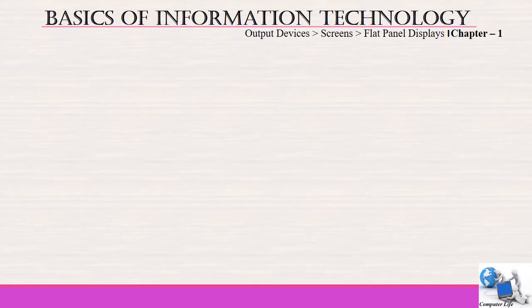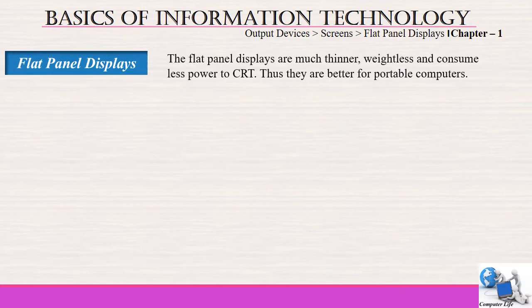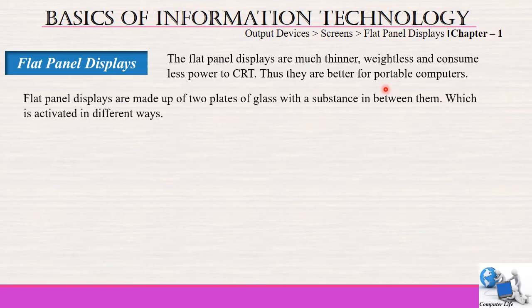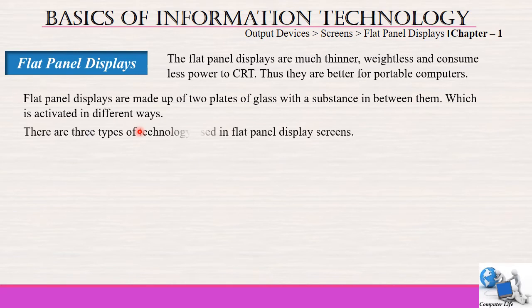The next type is flat panel, which is the latest technology. Flat panel displays are much thinner, lighter and consume less power than CRT, thus they are better for portable computers like laptops. Flat panel displays are made up of two plates of glass with a substance in between them which is activated in different ways. There are three types of technologies used in flat panel display screens to produce images.